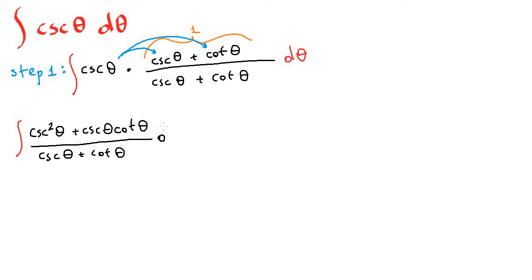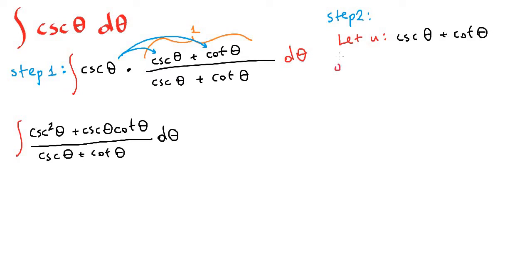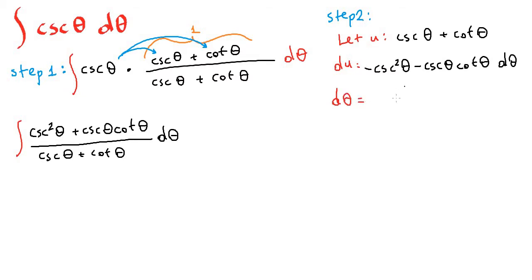As our step 2, we are going to apply u-substitution. Let u be equal to the denominator: cosecant theta plus cotangent theta. Then du will be equal to the derivative of these functions. The derivative of cotangent theta is negative cosecant squared theta, and the derivative of cosecant theta is negative cosecant theta times cotangent theta, times d theta. Solving for d theta, d theta equals du over negative cosecant squared theta minus cosecant theta times cotangent theta.